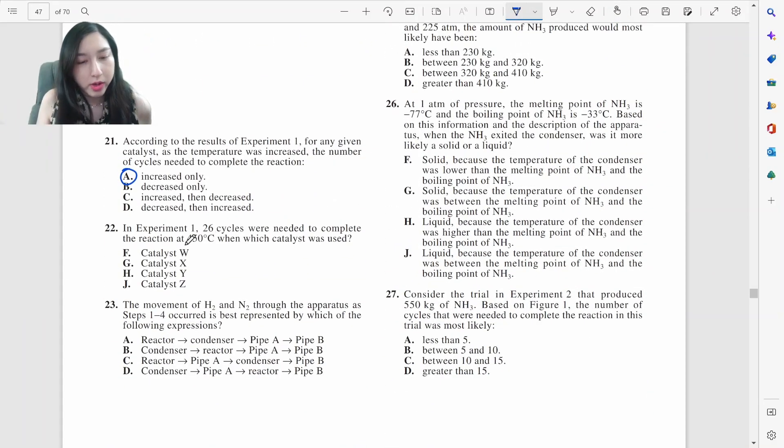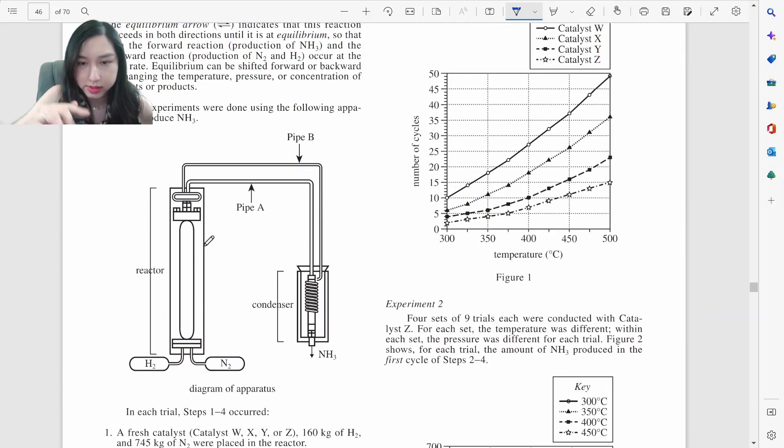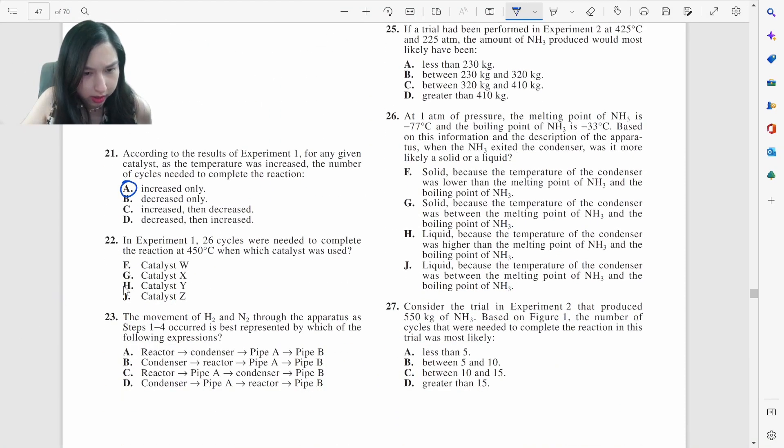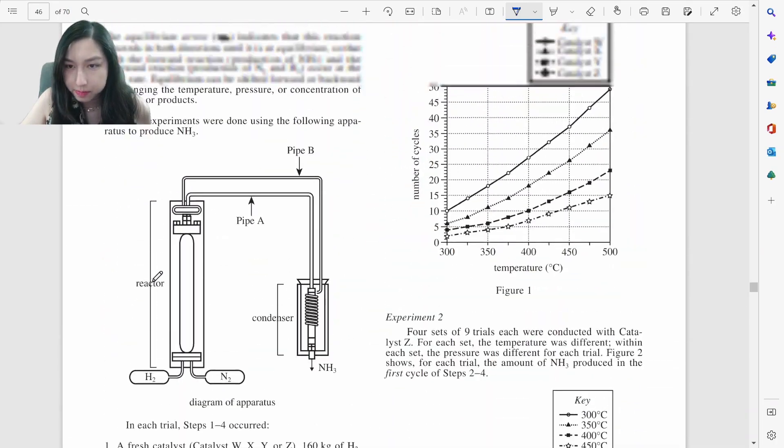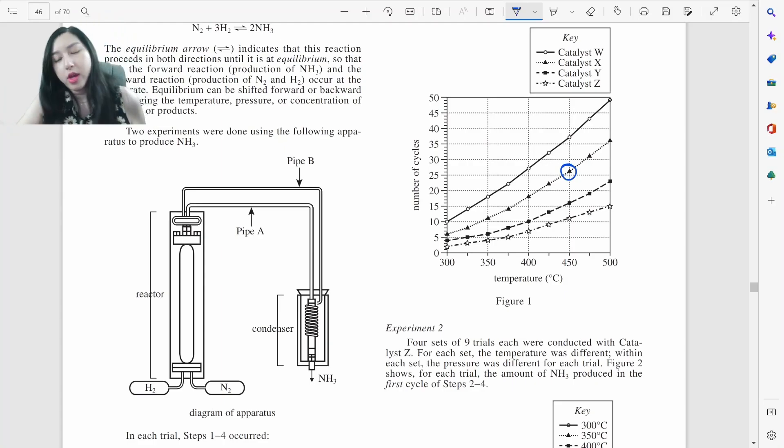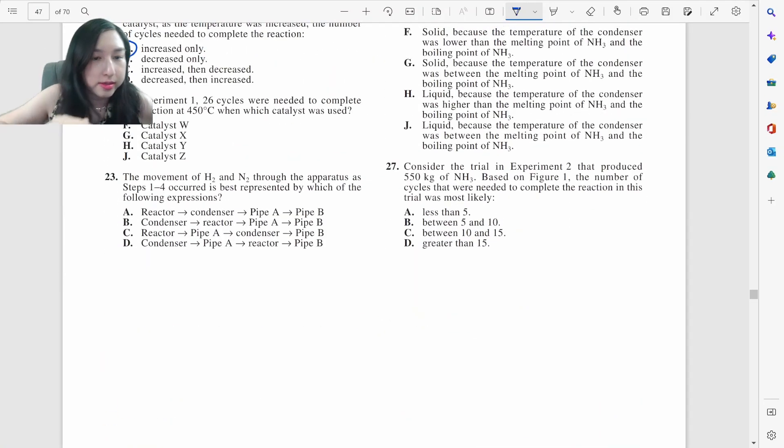Alright, experiment one, 26 cycles for 450. So 26 cycles, that's right here for, oh no, for 450. At 450, alright, so right here then. 450, 26. There we go. It's the triangle, which is XG.